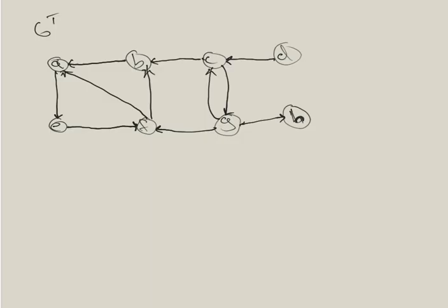We start from vertex A, which is discovered at time one. We look at the outgoing edges from A — A can go to E, so we go to E, which is discovered at time two. E can go to F, so F is discovered at time three. F has two edges going out, to B and A, but we've already been to A, so we go to B, which is discovered at time four.